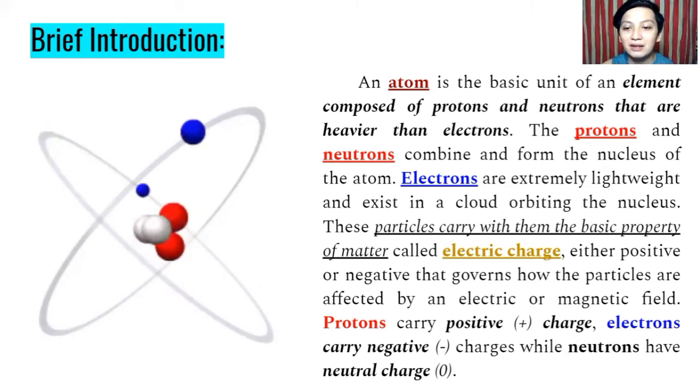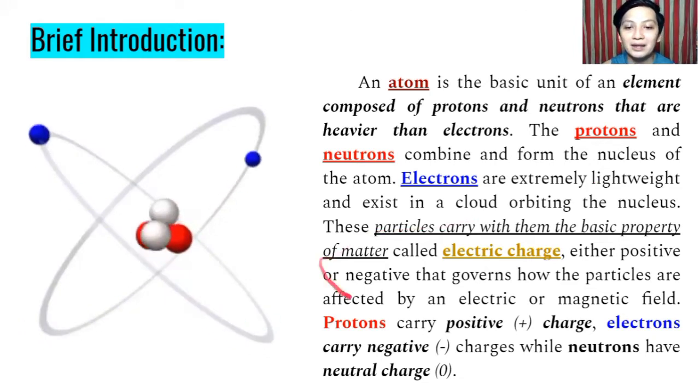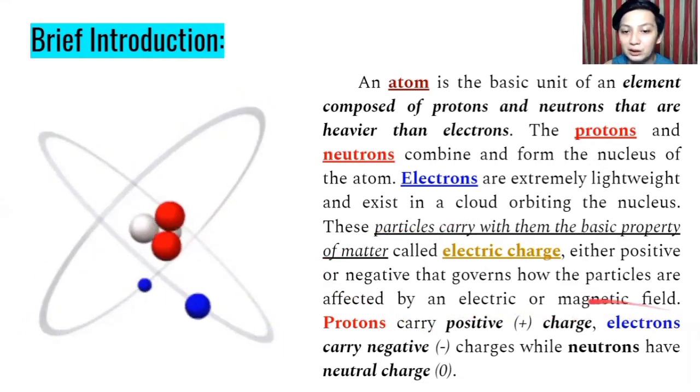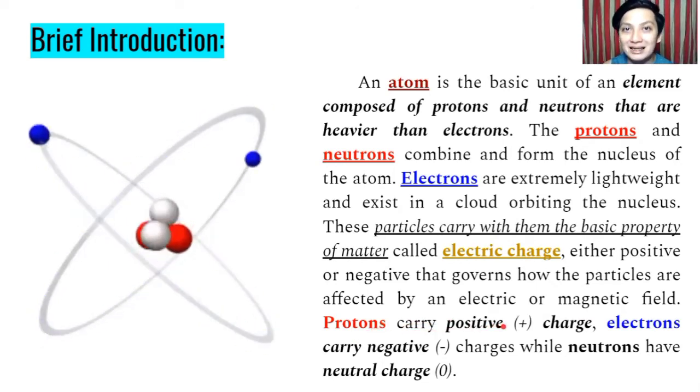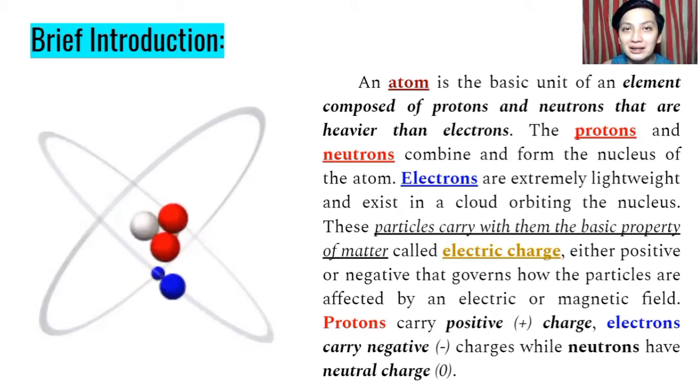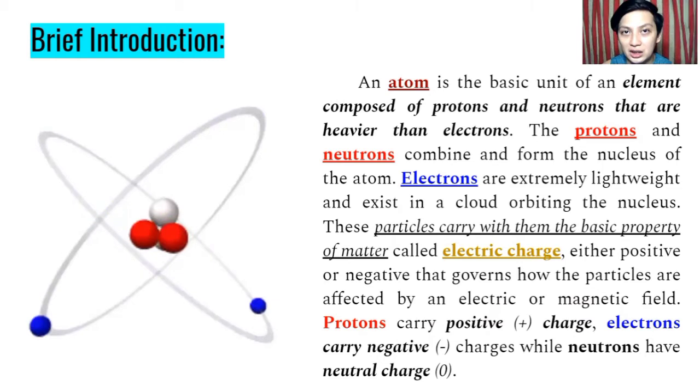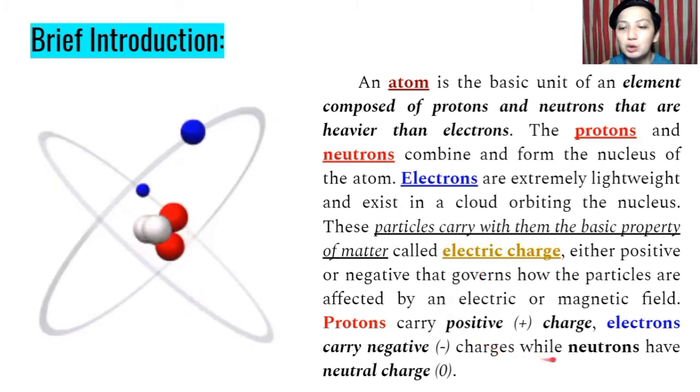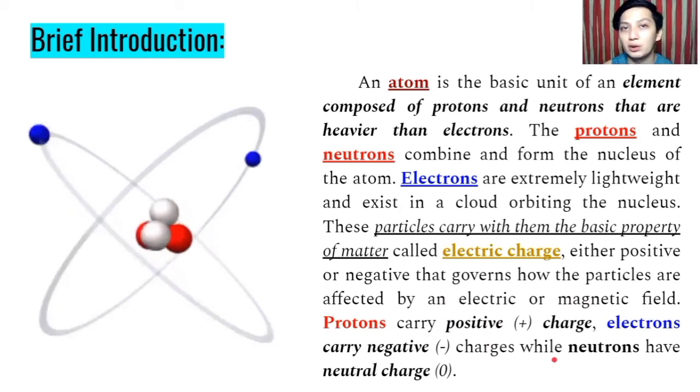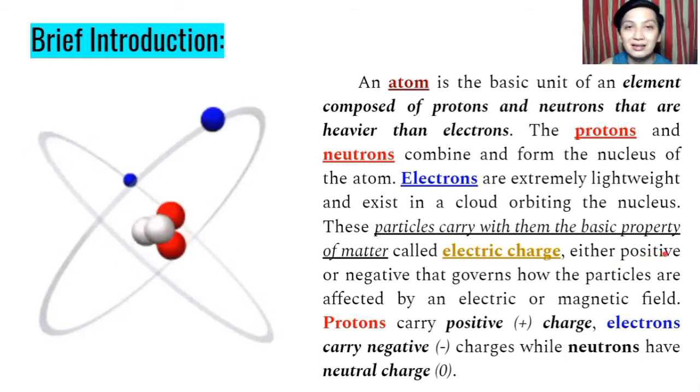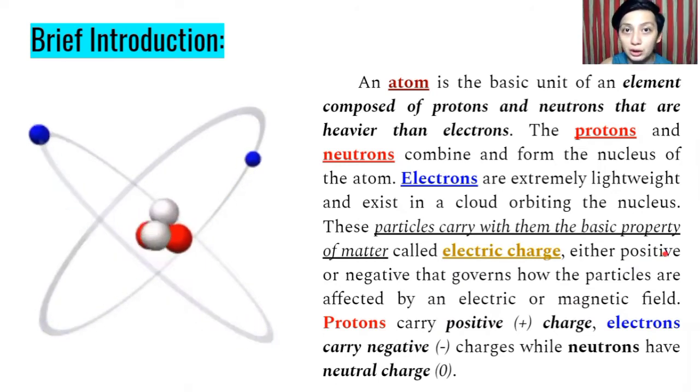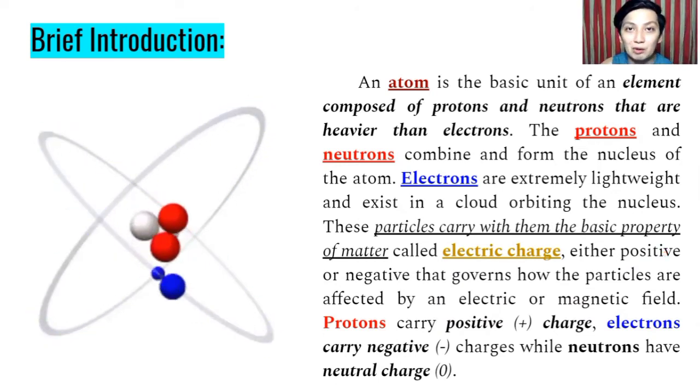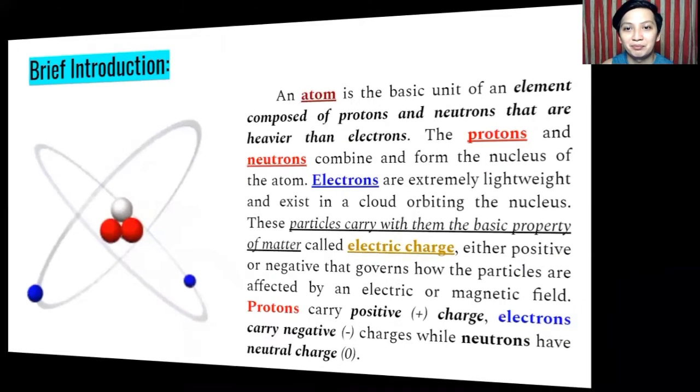The protons and neutrons combine and form nucleus of the atom. So yung nandun sa nucleus ng atom ay ang protons and neutrons. While electrons are extremely lightweight and exist in a cloud orbiting the nucleus. So para siyang nagpo-form ng cloud. Dahil sobrang bilis niya gumalaw, so nakakapag-form siya ng cloud orbiting the nucleus. These particles carry with them the basic property of matter called electric charge. Either positive or negative that governs how the particles are affected by an electric or magnetic field. Protons carry positive. Electrons carry negative. While neutrons, it has neutral charge or we can say no charge at all.